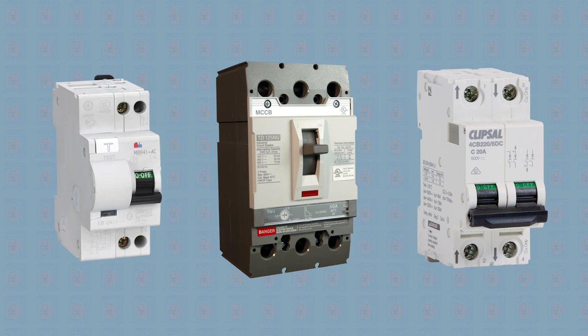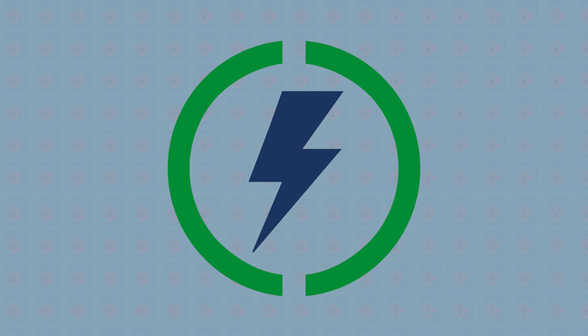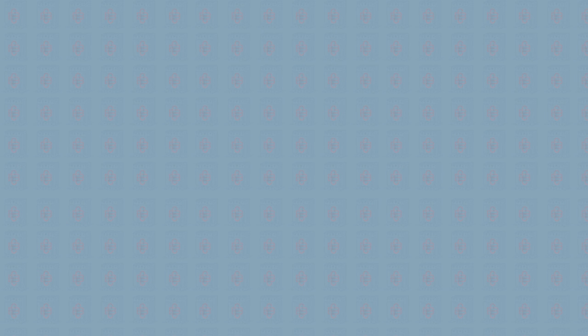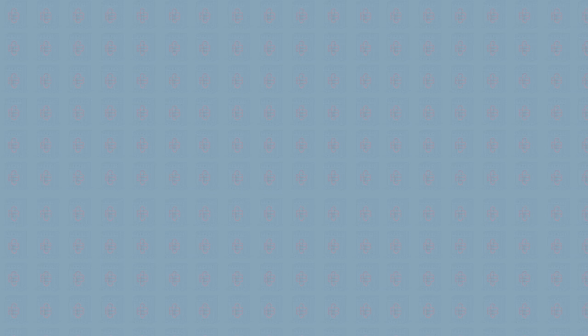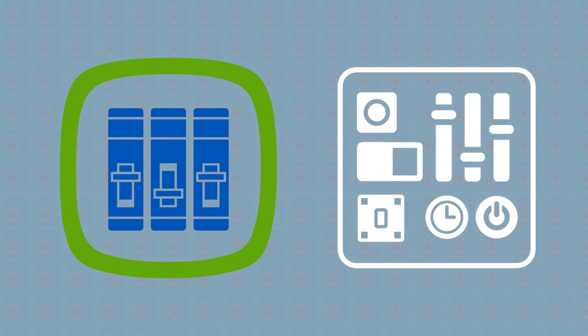If at any time during the circuit breaker selection process you are unsure or unsafe, stop what you're doing. If you're not completely confident the power is off, you're guessing at voltage, or you're unclear whether an appliance will require one or two pole breakers — put down the tools and call the experts. Some cases are tougher than others; an old worn breaker may have faded labels, or a panel might look confusing. In these cases, it's always a good idea to call the pros.